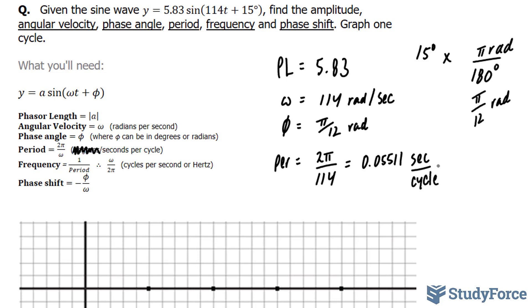Now, since this number is tiny, we can change seconds to milliseconds by multiplying this number by 1,000. So let's go ahead and do that. We have 55.11 milliseconds per cycle.